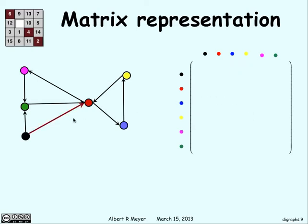For example, there's an edge that goes from the black to the red. So, on the black row, in the red column, we're going to put in a 1.